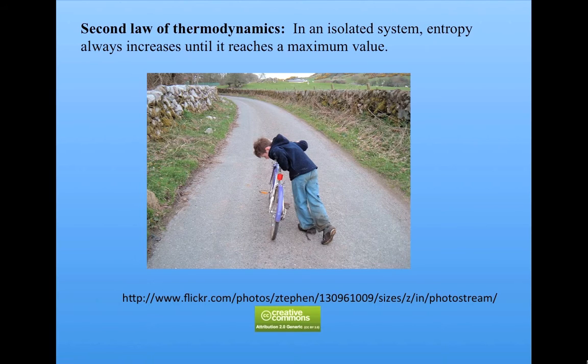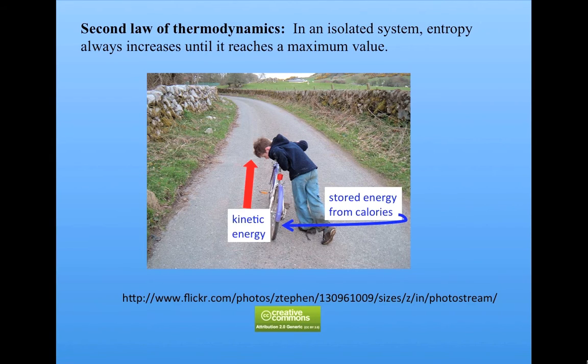For example, suppose you're pushing a bicycle up a steep hill. Your stored energy from calories is being transformed into mechanical or kinetic energy. That is, the motion of the bike and your body. But there is a price to pay. This transformation also results in heat loss from your body. That is, energy that can't be used for work. In other words, energy that doesn't contribute to moving the bike and you up the hill. This is entropy, produced by the transfer of energy.